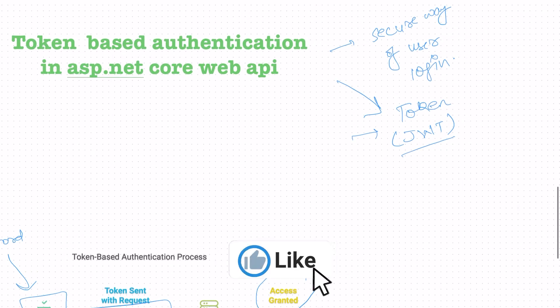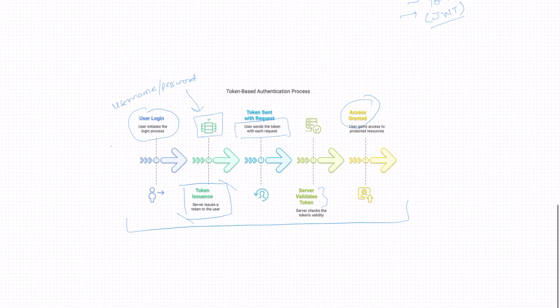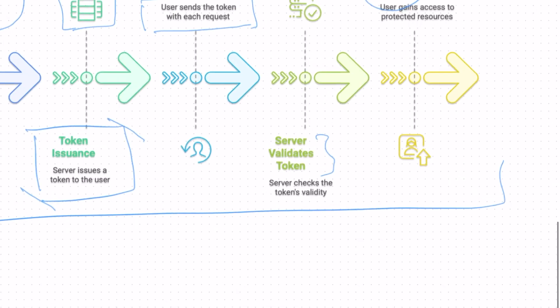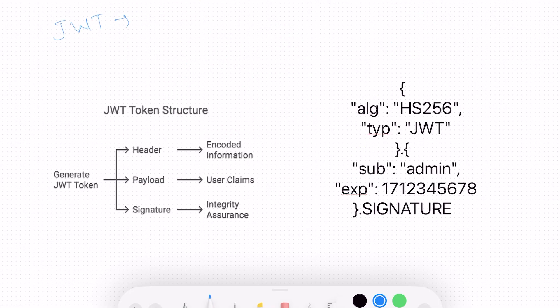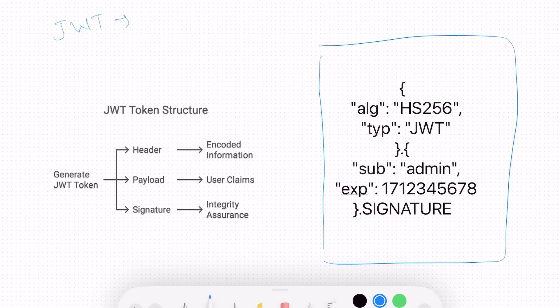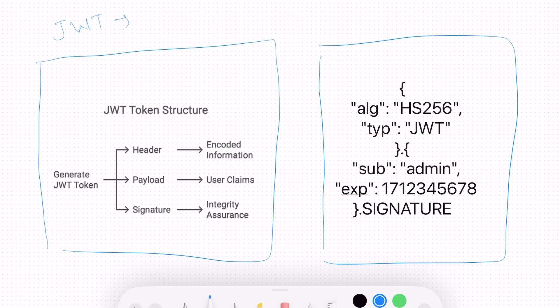At the start of the video I mentioned something called a JWT token. Let's understand what that is. I have a sample JWT token on the right-hand side — this is how it usually looks. On the left-hand side is the usual structure of a JWT token. The first part is called the header, which tells you the algorithm being used for encoding — in this case HS256 — and the type of token, which is JWT.